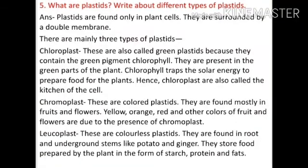Question five: what are plastids? Write about their different types. Plastids are found only in plant cells and are surrounded by a double membrane. Type one: chloroplasts — green plastids containing chlorophyll, present in the green parts of plants. Chlorophyll traps solar energy to prepare food for the plant; hence chloroplasts are called the kitchen of the cell.